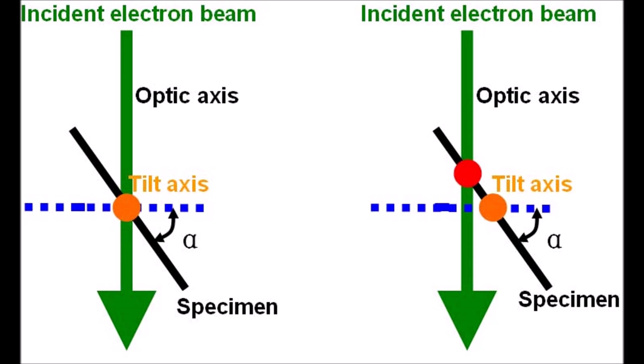I want to start by showing you this diagram. Eucentric height is quite simply the position along the optic axis of your microscope that intersects with the eucentric tilt axis of your stage. If you're working with a Tecnai or an FEI instrument, the eucentric tilt axis will be the alpha axis. If you're working with a JEOL it will be the X axis. Those using double tilt holders also have a beta tilt, but that secondary tilt axis is not a eucentric tilt axis — it is a property of the stage, not the holder.